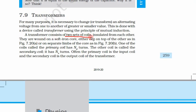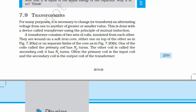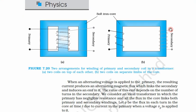A transformer consists of two sets of coils, insulated from each other, wound on a soft iron core — either one on top of the other or on separate limbs of the core. One coil is called the primary coil and has NP turns (number of turns in primary coil). The other coil is called the secondary coil and has NS turns. Often the primary coil is the input coil and the secondary coil is the output coil.